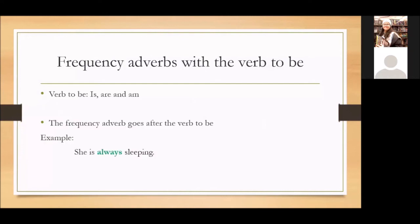Now we are going to learn how to create sentences in simple present using frequency adverbs. First, remember that is, are, and am constitute the verb to be. In this case, the frequency adverb goes after the verb to be. Example: she is always sleeping.